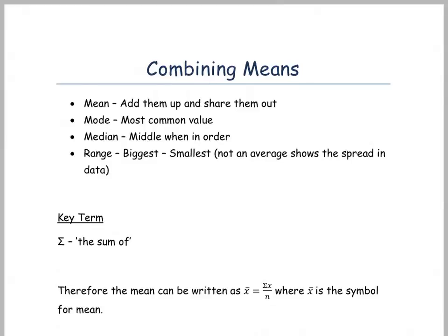So the mean is where you add up all the data and you divide by how many bits of information you have. So if you have five bits of information you divide by five.